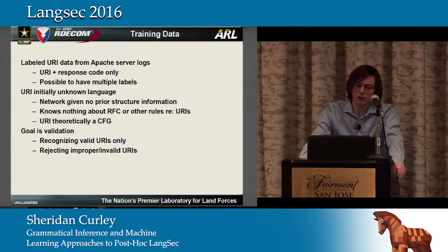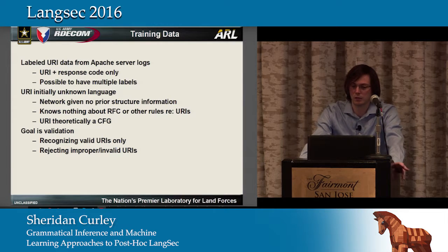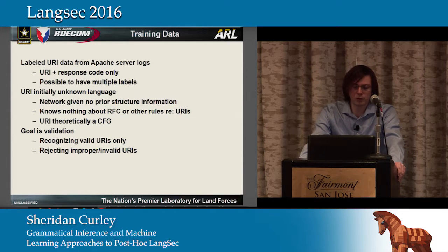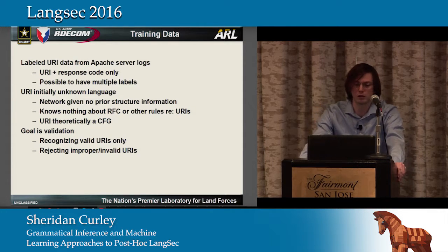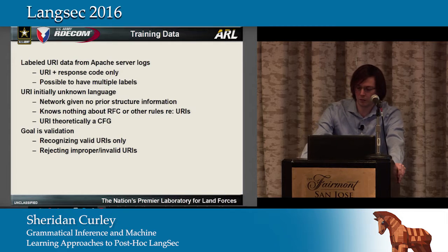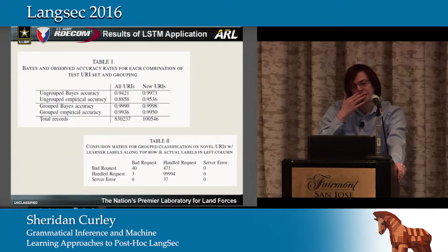The training data is labeled URI data from Apache server logs. We stripped out everything like IPs, headers, and similar — it's literally just the URI plus the response code from the server for that URI. It is possible to have multiple labels, especially once we start grouping, which we'll get into. As far as the network is concerned, a URI is completely unknown to it — it doesn't know the structure, nothing about the RFCs or convenient constructions. It only knows a URI is a series of letters and we give it examples of what a URI is or shouldn't be. Our goal is validation: recognize only valid URIs, rejecting anything invalid while not rejecting perfectly reasonable URIs.